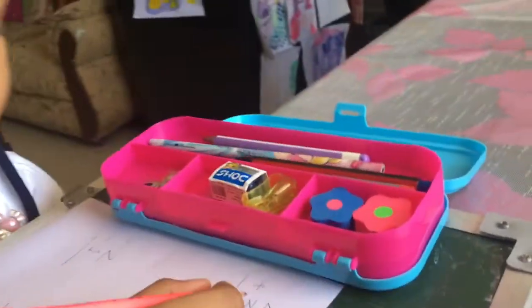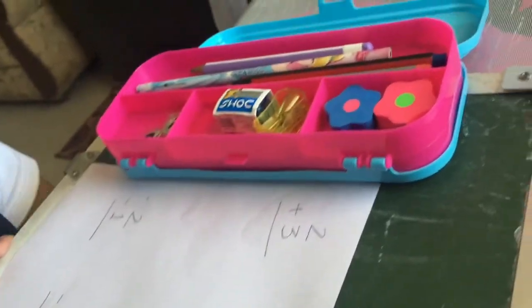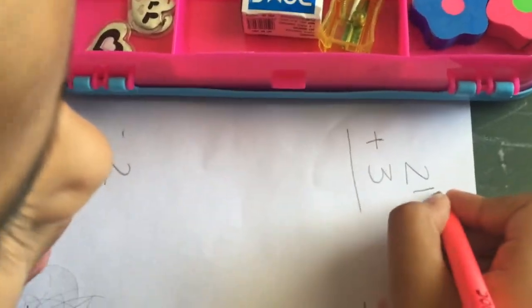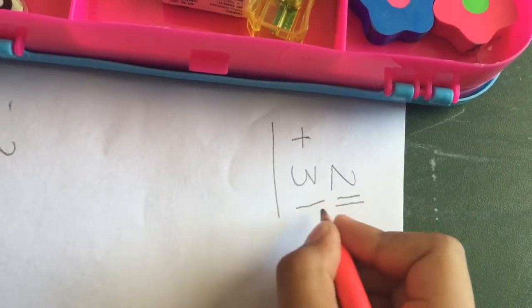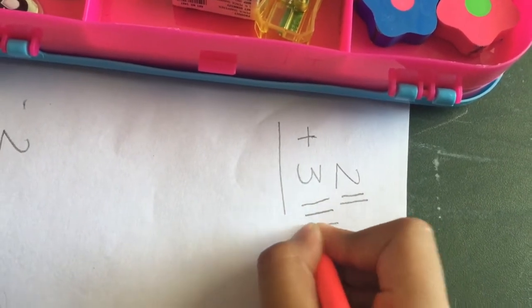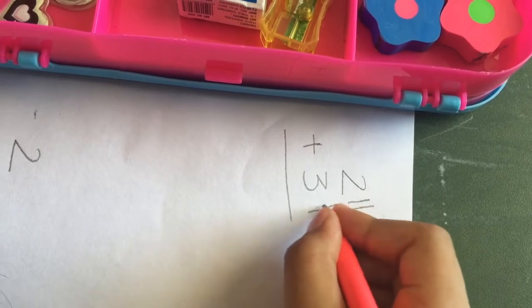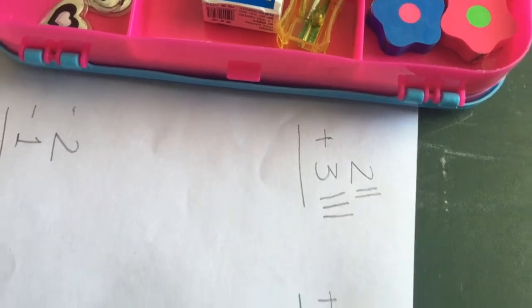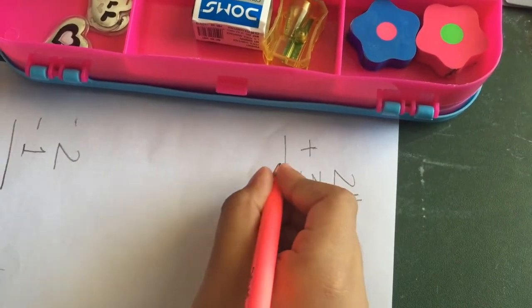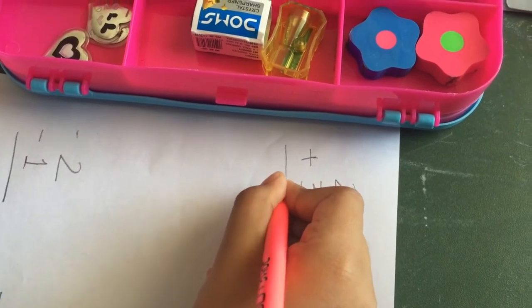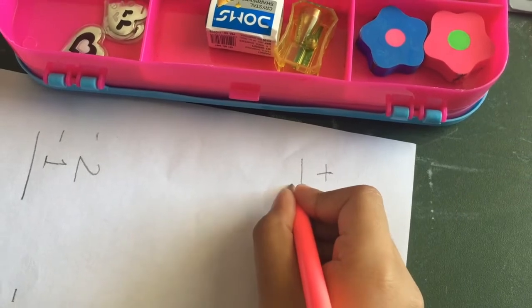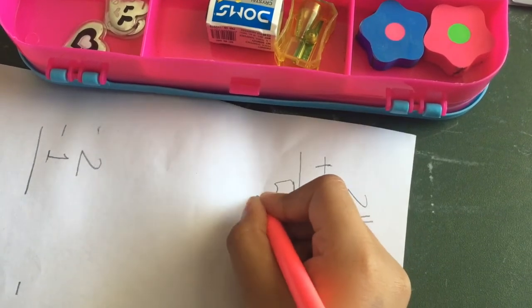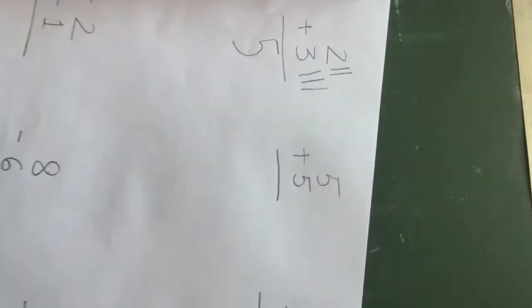So 3 plus 2 is 1, 2, 3 lines. So that will make 2 lines and then 3 lines. And how much that makes? 1, 2, 3, 4, 5. So we will have to write 5. So it's 5.